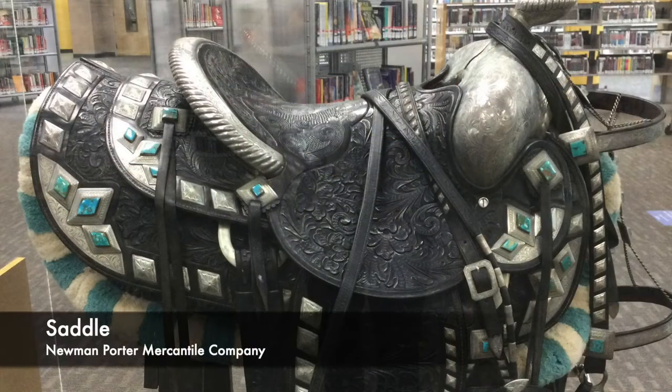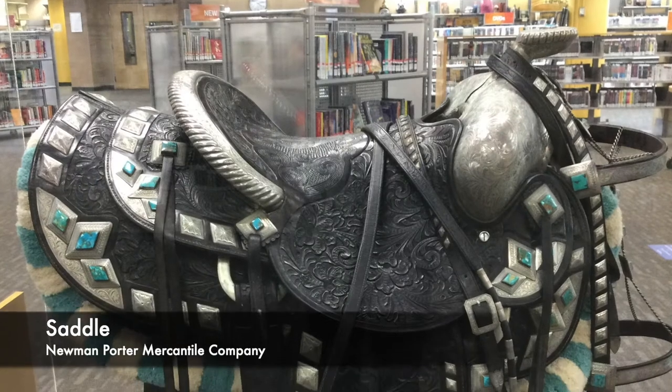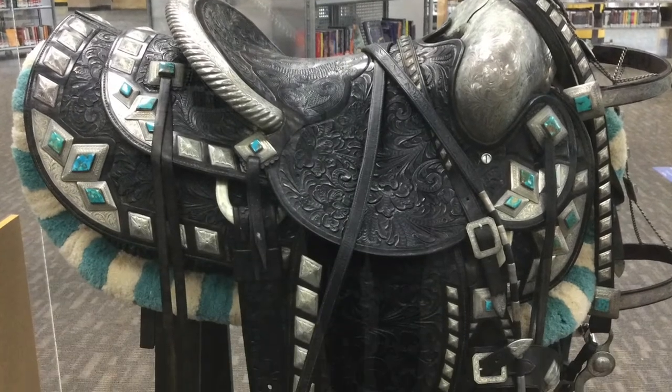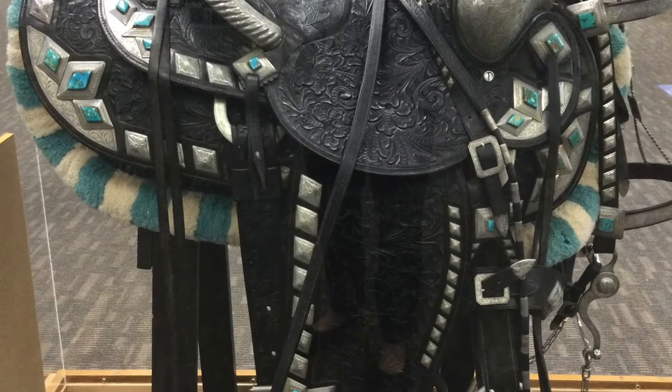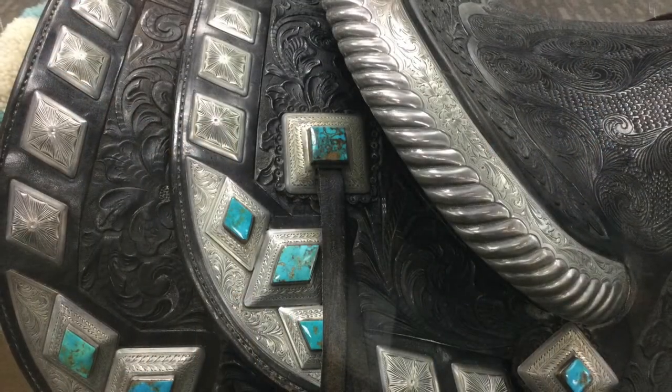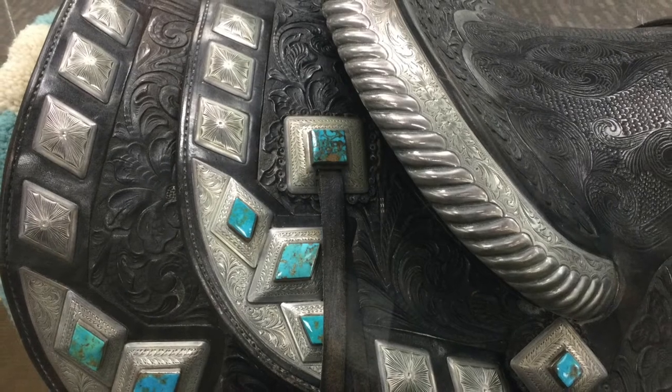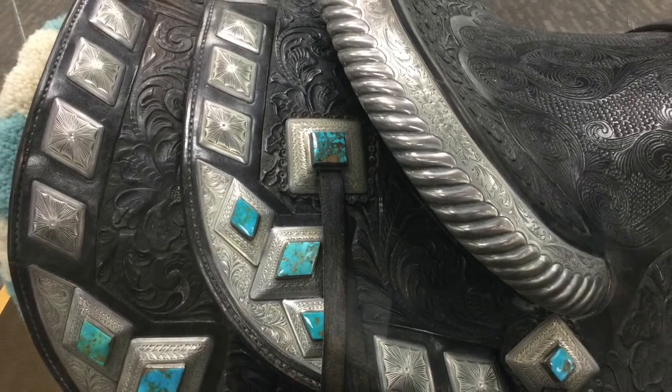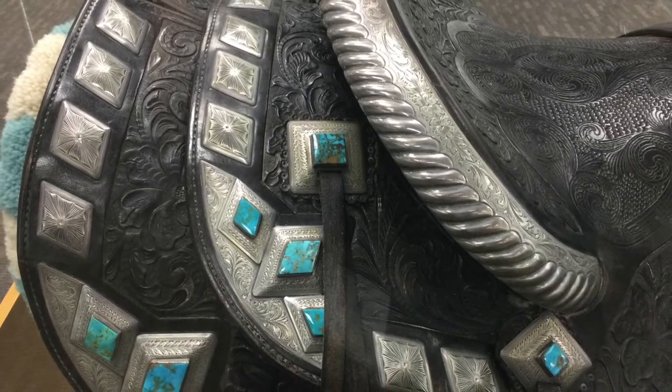Ann McCormick commissioned this saddle, which was made in 1950 by Newton Porter Mercantile Company in Phoenix. The silver and turquoise details were made in Los Angeles by Bo Lin. Ann McCormick spent two years collecting turquoise pieces so that everything would match.